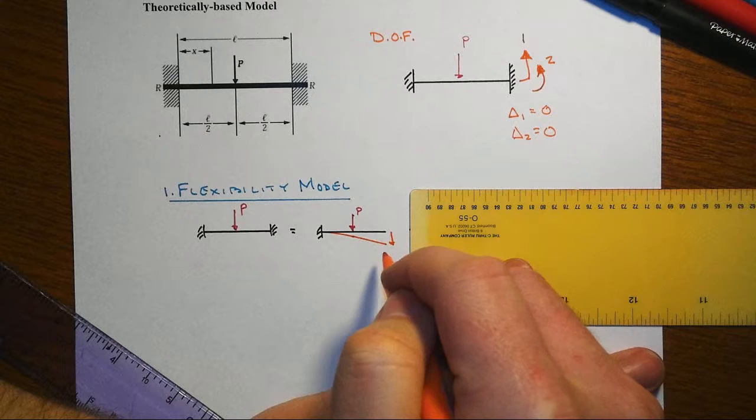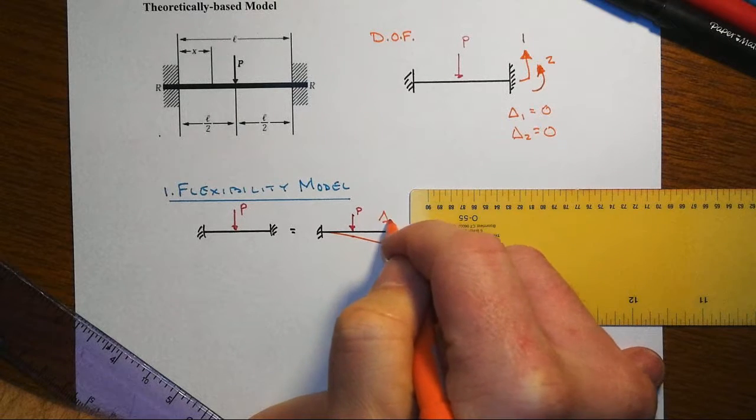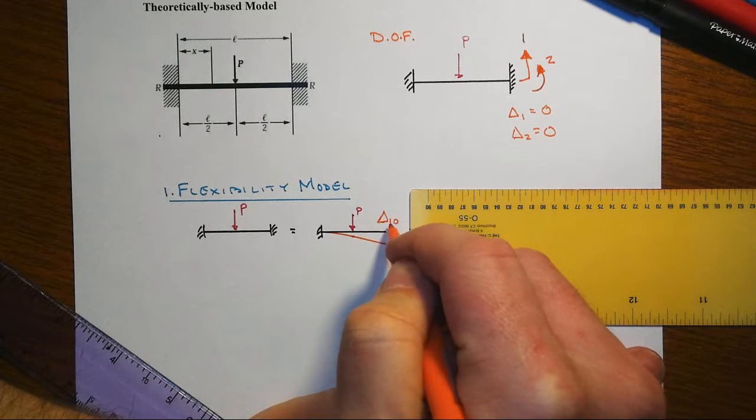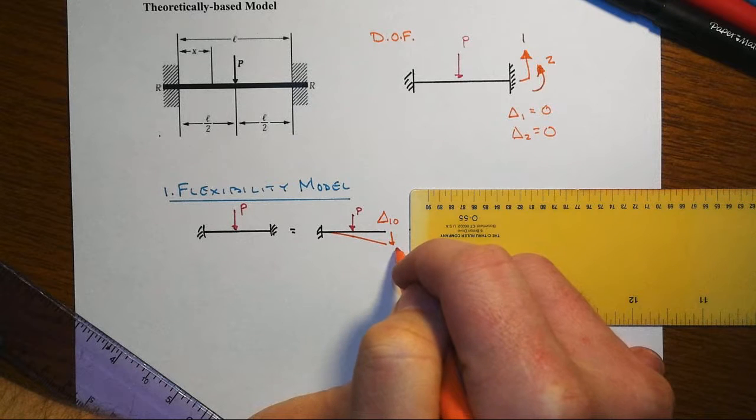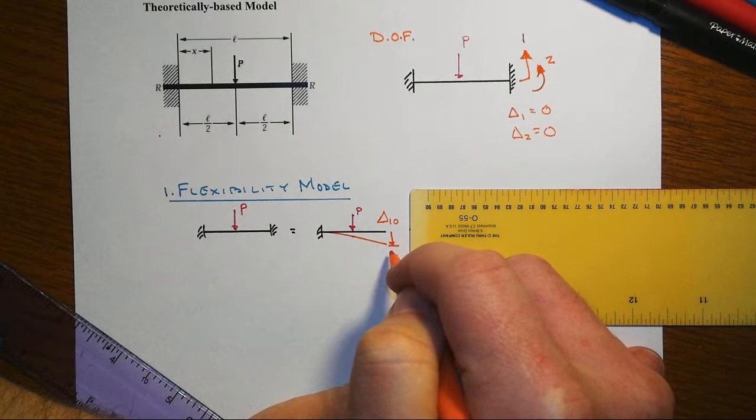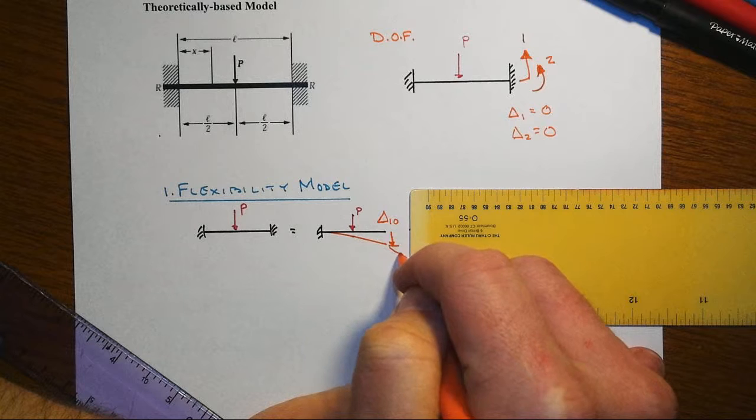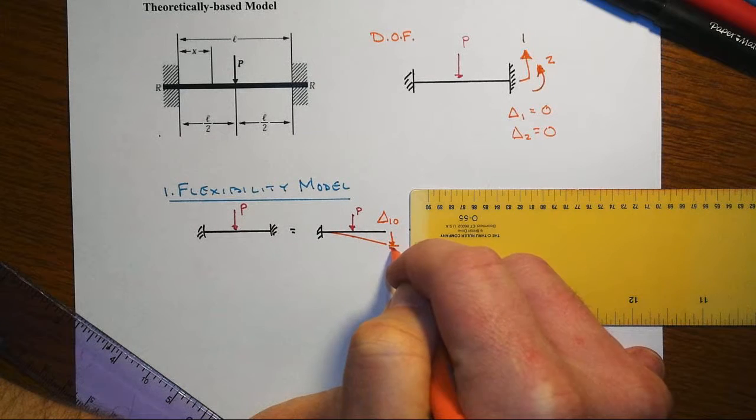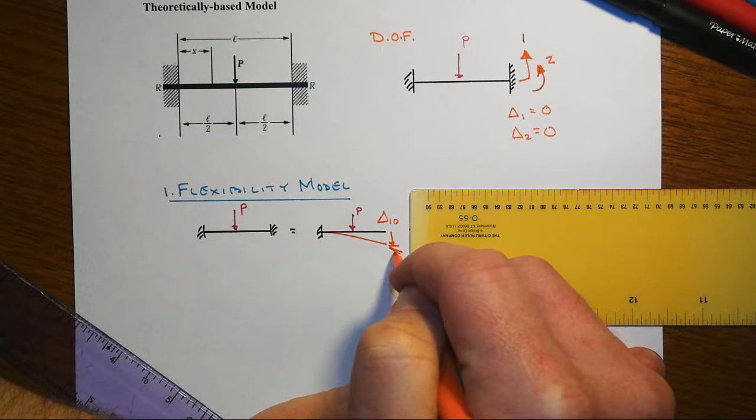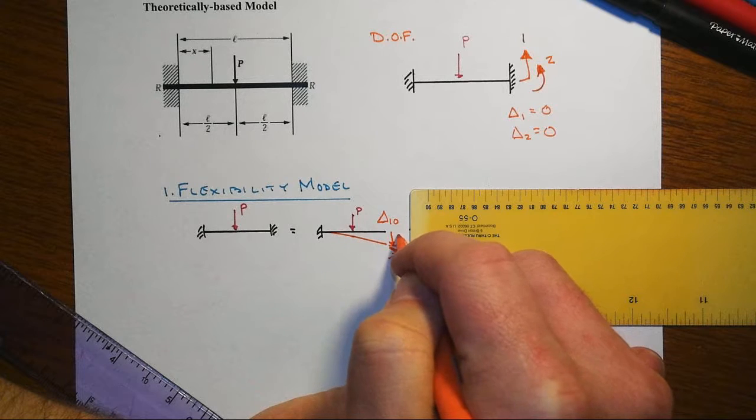In that primary system, the translation would be called delta one zero, for the one for the degree of freedom that we're at, and then zero being the situation that we're in, which is the zero or primary loading.